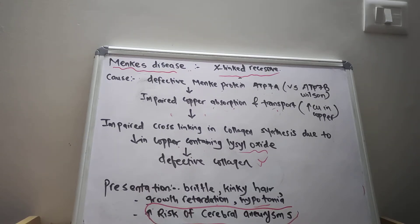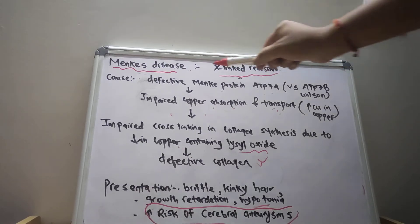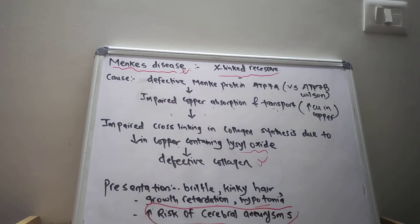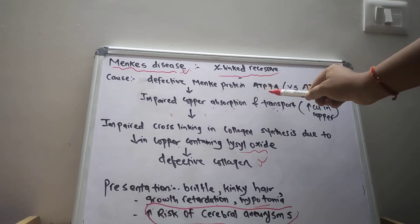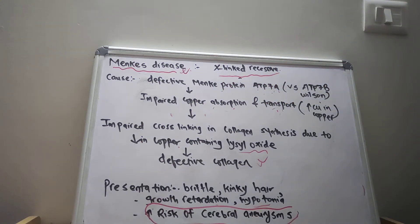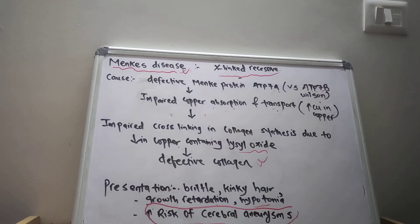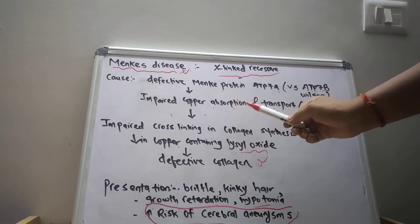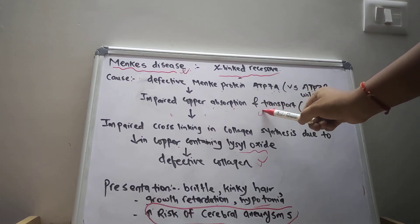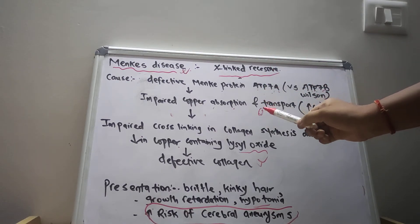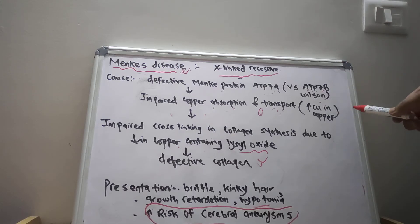An important point is to differentiate between Menkes disease and Wilson disease. In Menkes disease, there is a defect in the protein ATP-7A, whereas in Wilson disease, there is a defect in ATP-7B. In Menkes disease, there is a decreased amount of copper in the cell, whereas in Wilson disease, there is copper overload.